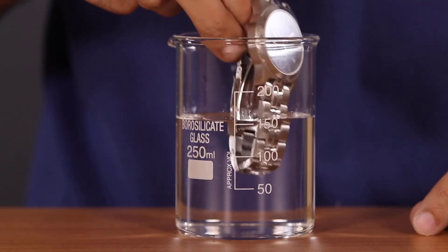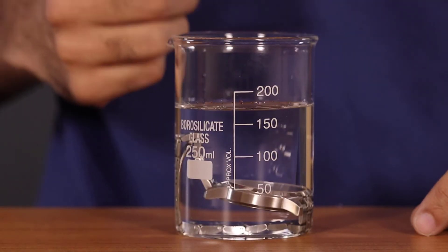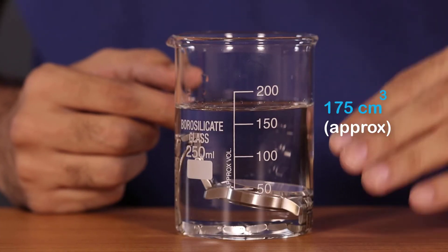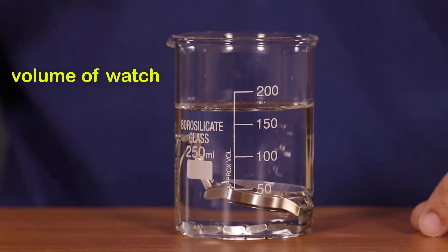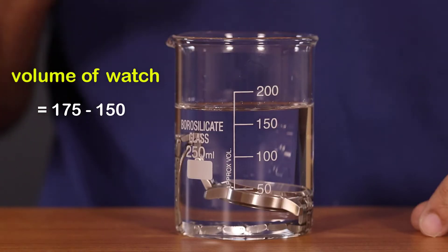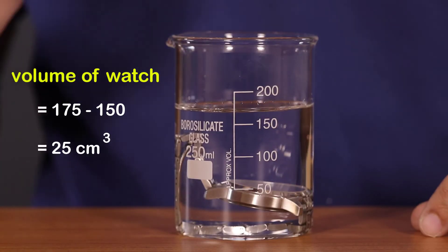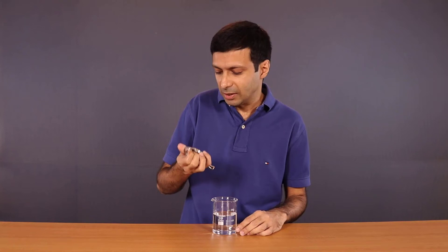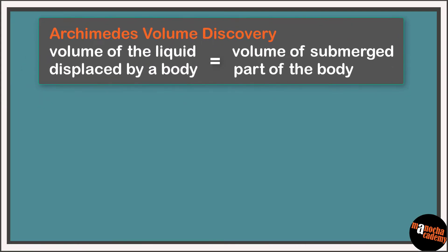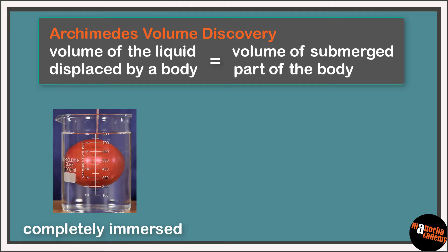After lowering my watch into the beaker, the water level has gone up to 175 cm³. So the volume of my watch is 175 minus 150, which is 25 cm³. Let's place Archimedes' volume discovery on our concept board: when a body is completely immersed in a liquid, the volume of the liquid displaced is the volume of the body.